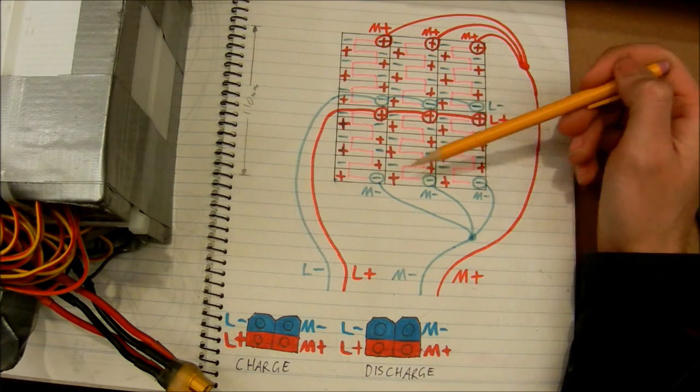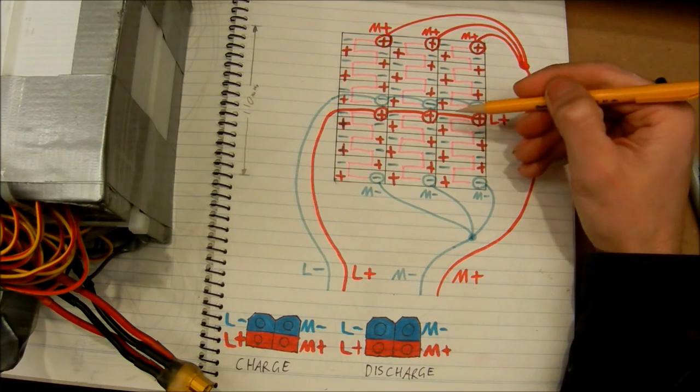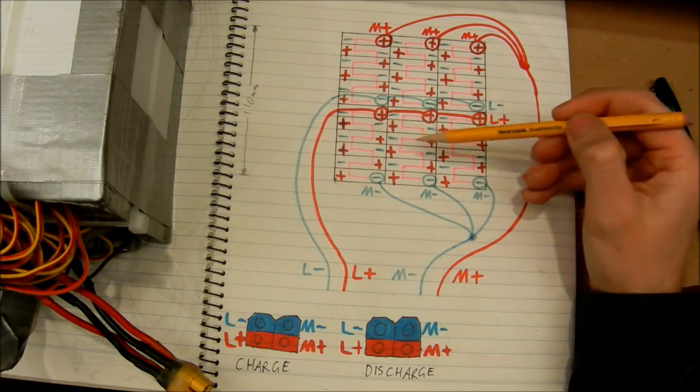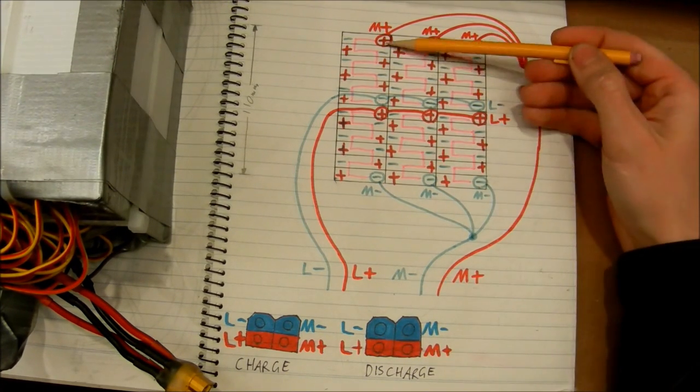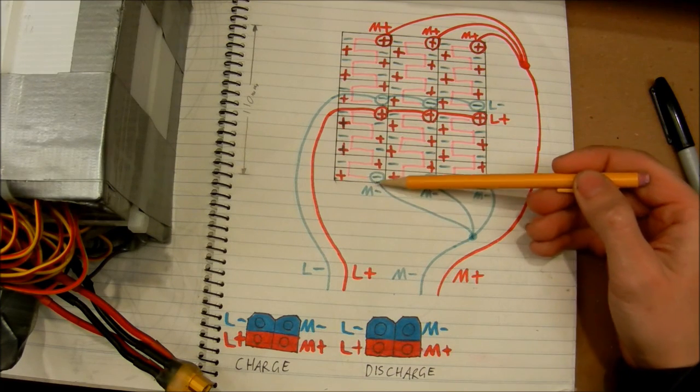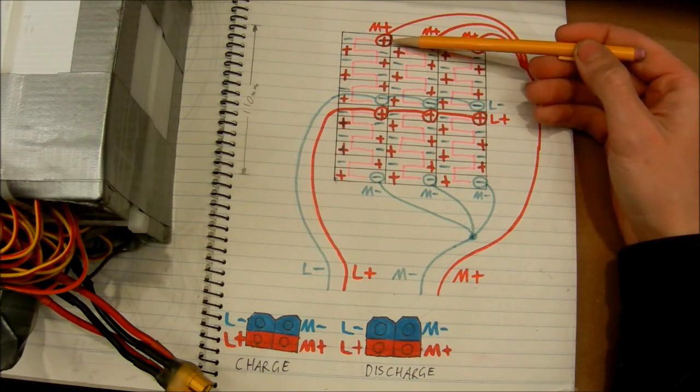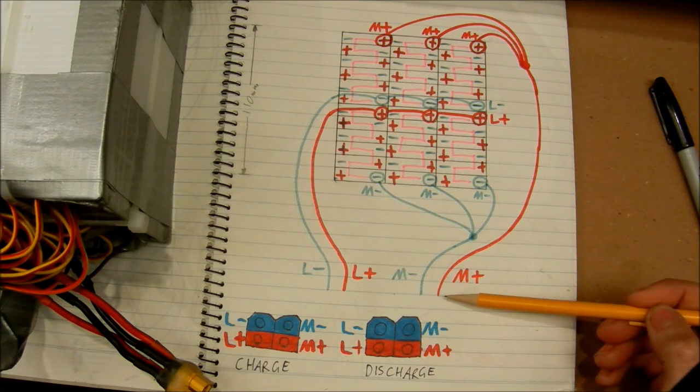And obviously the positive to the positive again, to be able to charge them so that it will be 24 volts, 30 amp hours. So normally when it's discharging, it's just 12 in series. You can see at the negative end of the battery, you've got the negative wire to the motor. At the positive end of the battery, you have the positive wire to the motor.